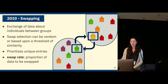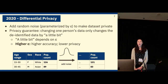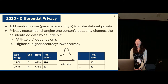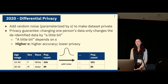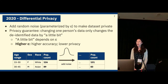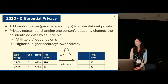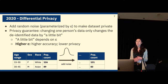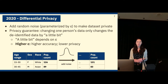In the context of the census, differential privacy means adding random noise parameterized by a variable epsilon to make the dataset private. This achieves a formal privacy guarantee, which says that changing one person's data only changes the de-identified data by a little bit, where that amount depends on the epsilon parameter. Looking at the tables, on the right we have true counts — for example, age 15–30, sex female, race white, with a true count of 126 — whereas the published count on the left is 131. There's a trade-off: higher epsilon means higher accuracy and lower privacy.